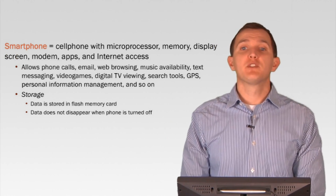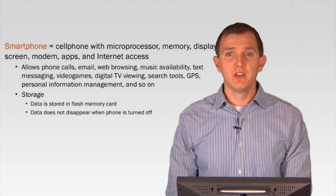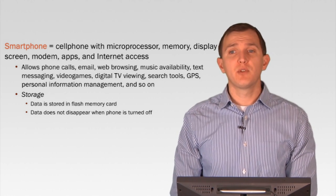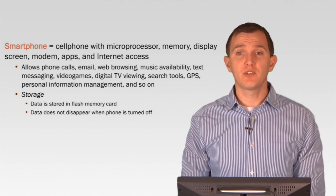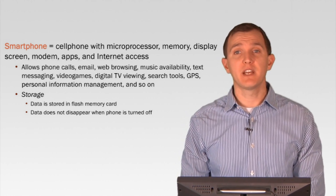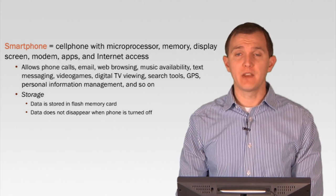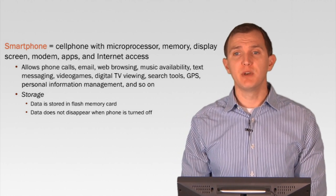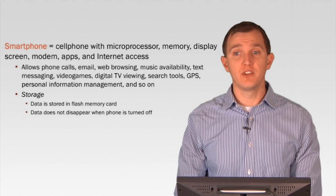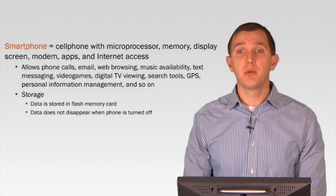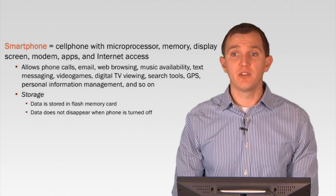Getting into smartphones — which are basically computers with the ability to make phone calls. A smartphone is a cell phone with a microprocessor, memory, display screen, modem, apps, and internet access. A smartphone allows for phone calls, email, web browsing, music, text messaging, video games, digital TV viewing, search tools, GPS, personal information management, and so on. It's really pretty impressive to think that just five or ten years ago I had a little red flip phone that may or may not have even had a camera.